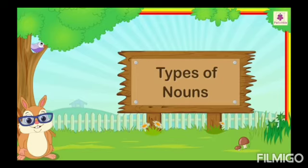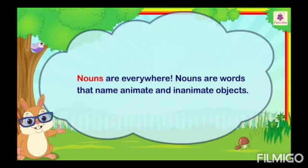So first of all, I will like to explain you about common noun. Common noun or general name of any person, place or animal or thing is called a common noun. As in your screen also mentioned, nouns are everywhere. Nouns are words that name animate and inanimate objects. Nouns are all those names which we give to any person, to place, to animal, to anyone.